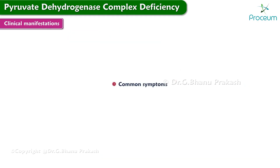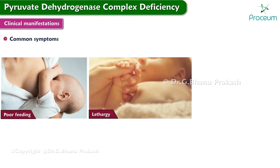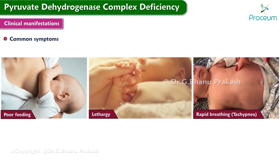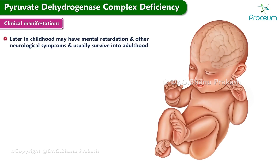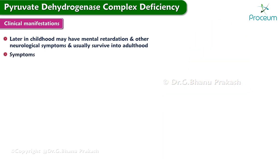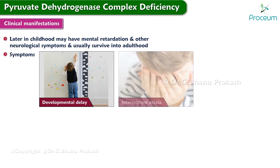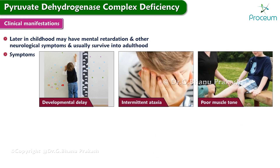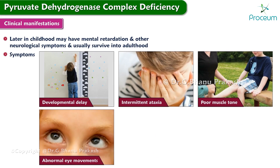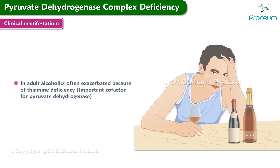Common symptoms of PDC deficiency may initially be poor feeding, lethargy, and rapid breathing or tachypnea in an infant. Those who develop PDC deficiency may have intellectual disability and other neurological symptoms and usually survive into adulthood. Symptoms may include developmental delay, intermittent ataxia, poor muscle tone, abnormal eye movements, and seizures.